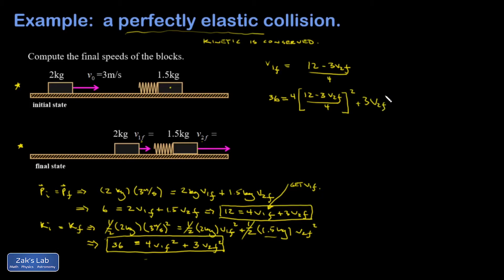Plus 3v2f squared. That leaves only one unknown in there and it's v2 final, and I've got to clean things up a little bit. So let's talk through this a bit: when I square the thing in the brackets, I'm going to end up with two factors of four in the denominator.